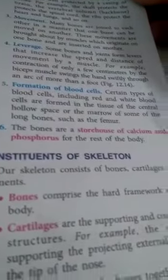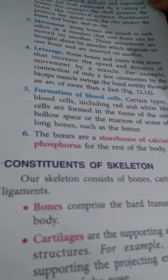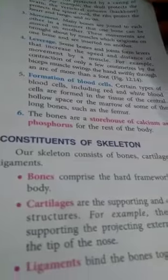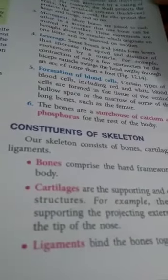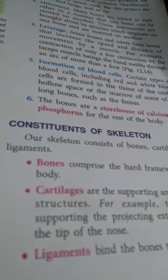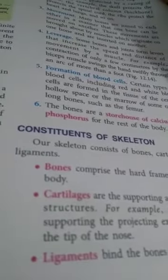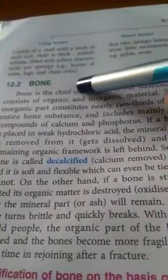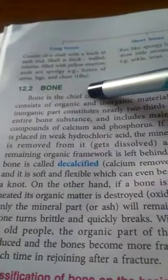Now let us come to the constituents of the skeleton. The skeleton consists of three things: bones, cartilage, and ligaments. Now let us first discuss bones.